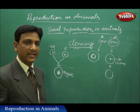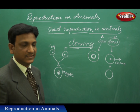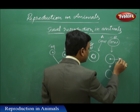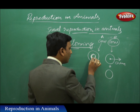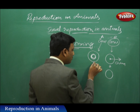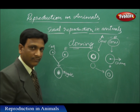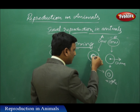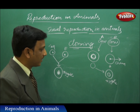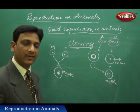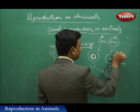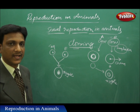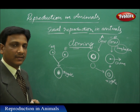This is all done in lab conditions — only scientists can do this process with sophisticated equipment, as we cannot see or manipulate the ovum with simple techniques; it is a very complicated process. Once the nucleus is removed and the ovum is free, the nucleus from the selected cell of cow A is separated and introduced into this enucleated ovum. It now becomes a zygote, and this zygote is placed in the uterus of cow B — implantation takes place.